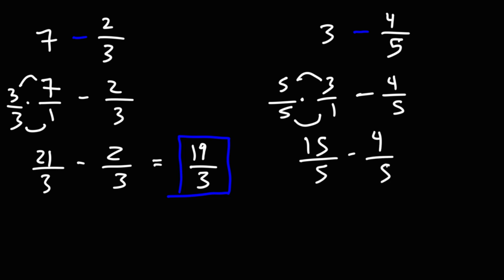So now that we have the same denominator, we could subtract the numerators of the two fractions. 15 minus 4 is 11. So the answer is going to be 11 over 5. So that's how you could subtract a whole number by a fraction.